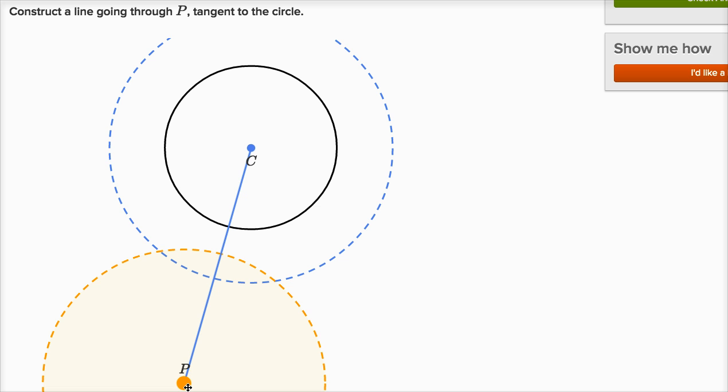Now why is this interesting? Why is what I just did interesting? Well, where these two larger circles intersect are going to be equidistant to P and C. How do we know that? Well, all the points on this circle are equidistant to C.